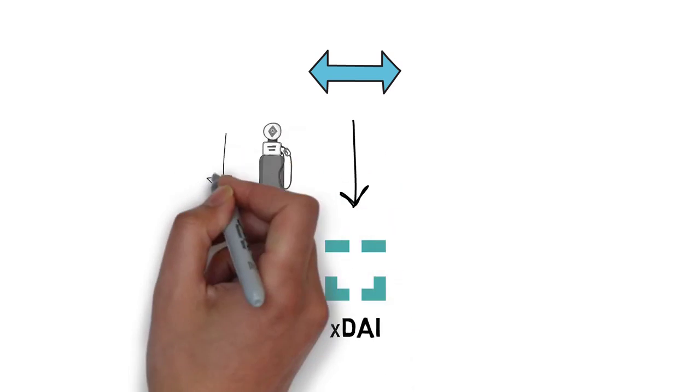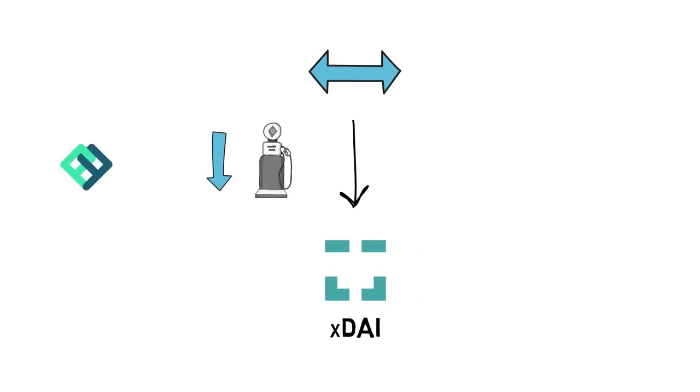All trades on Perpetual protocol are processed using the xDai chain, a layer 2 scaling solution. This allows for incredibly low gas fees that are currently subsidized by the protocol. This means that currently there are no gas fees while trading on Perpetual protocol.